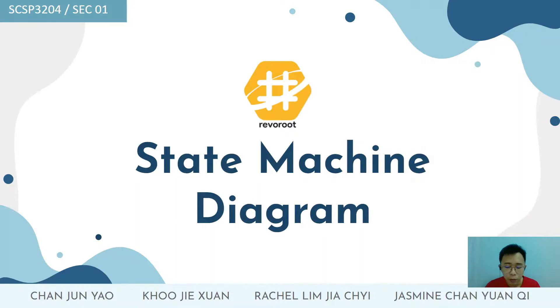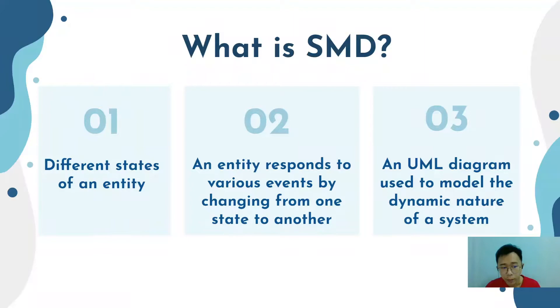Before we get into our use case, let me briefly talk about this state machine diagram. What is this state machine diagram? It's being used to describe the different states of an entity. An entity is not just a response to the corresponding inputs, but it also depends on the presenting state of it. We can say that it responds to various events by changing from one state to another. Therefore, this UML SMD diagram is used to model the dynamic nature of a system.